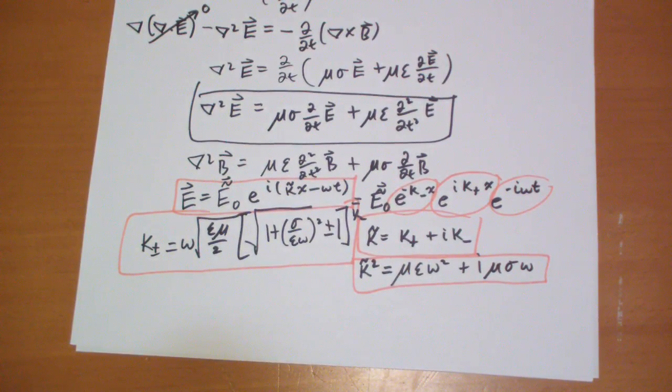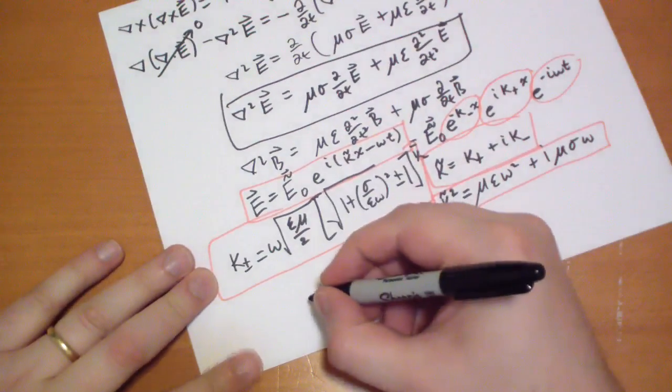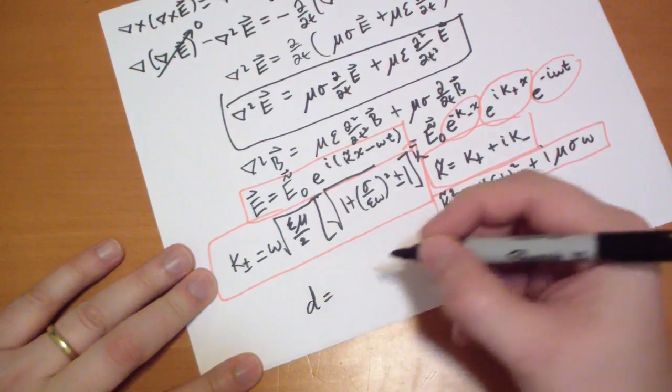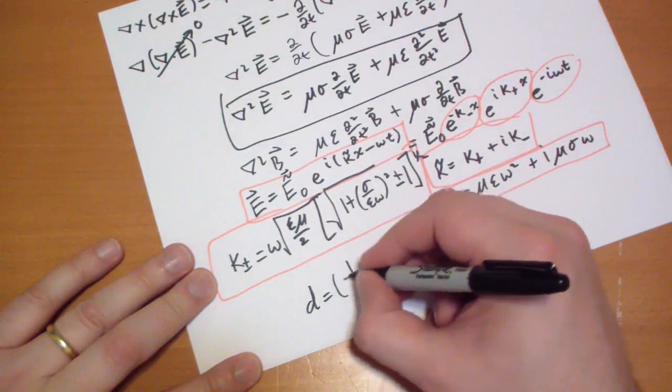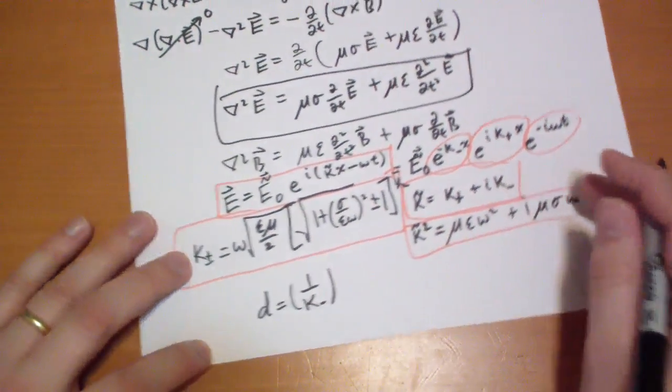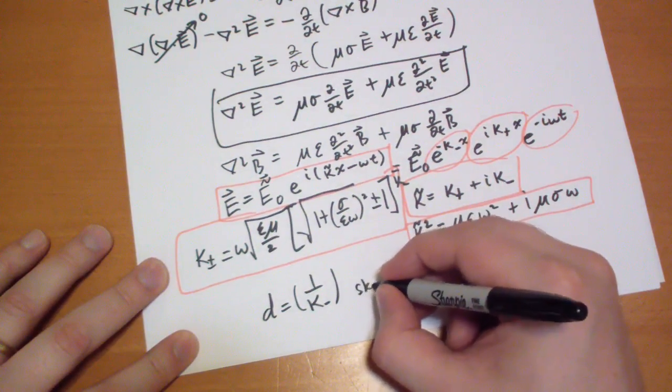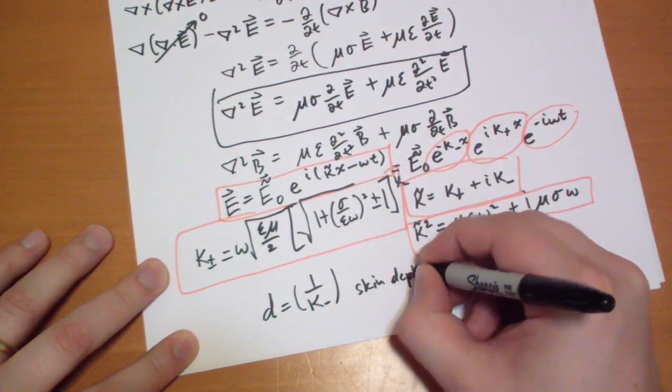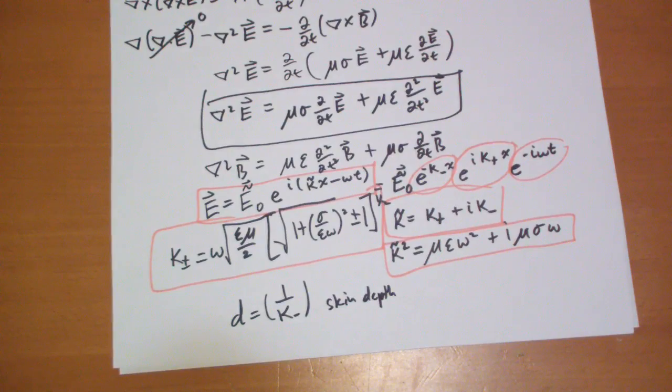The skin depth is the depth by which the amplitude of the wave will decrease by about one over e which is about one third. Skin depth is just simply one divided by kappa minus okay that's called the skin depth. It gives you a good feel of how deep that wave is going to penetrate into stuff.